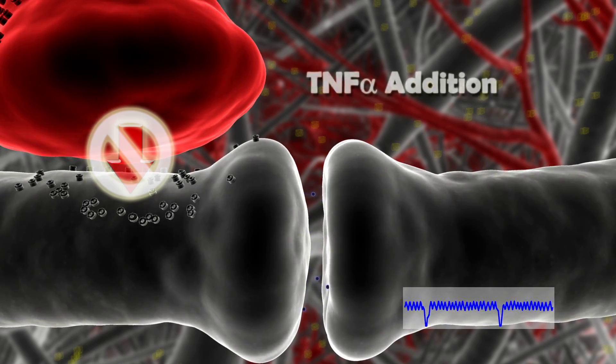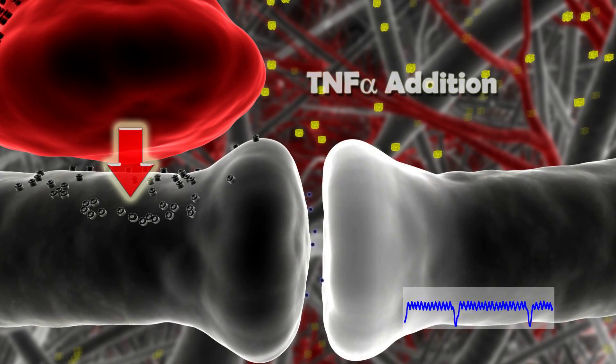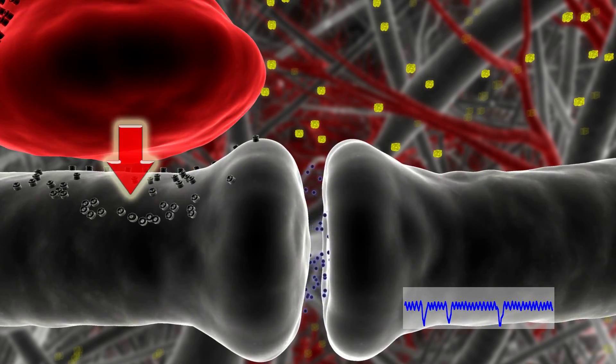However, by adding minimal amounts of TNF-alpha to the knockout preparation, we could restore the astrocytic effect.